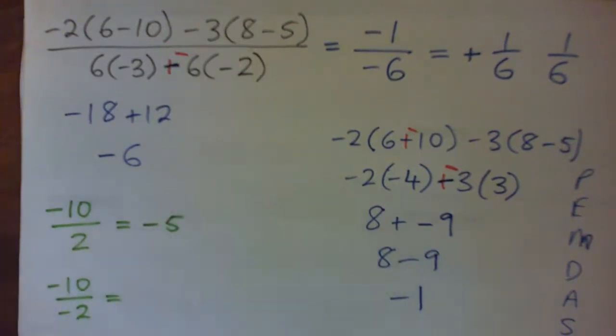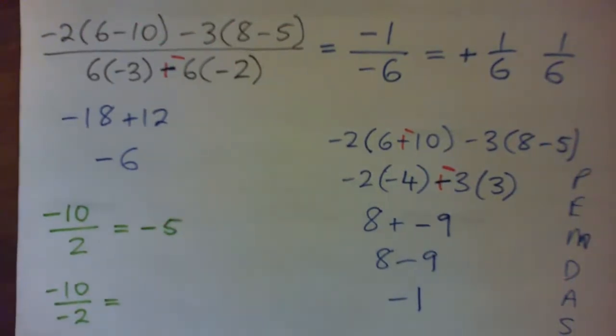So let's see if we can understand this. So negative 10 over positive 2 gets what? Negative 5, right? Negative 10 over negative 2 gets what? That's a negative over negative, which is positive, right? So that's going to be positive 5.